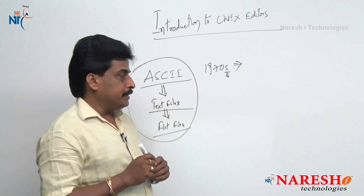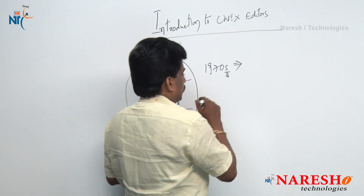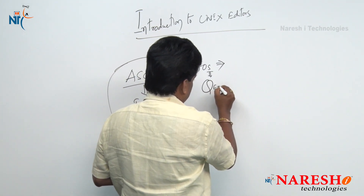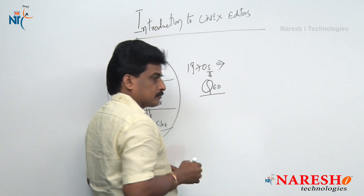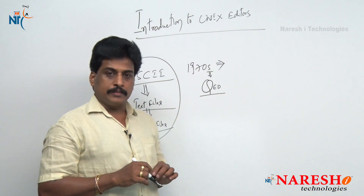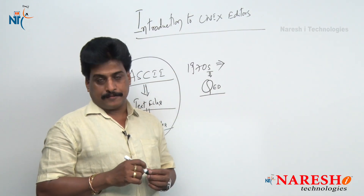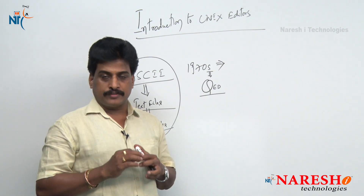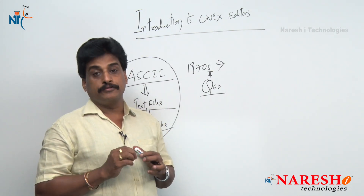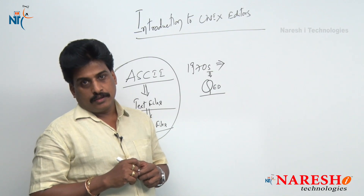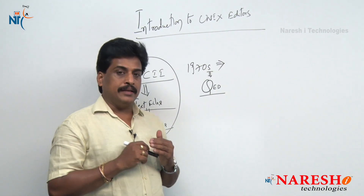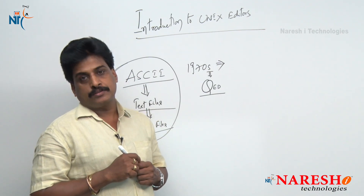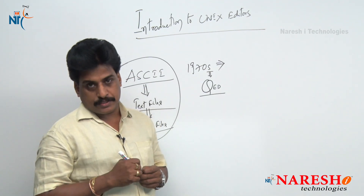The first editor implemented in the 1970s was called Qued — full form: Qued Editor. It is the first editor in the software industry officially, and it was mainly implemented for B language programming and execution purposes.